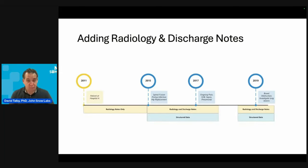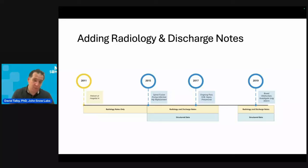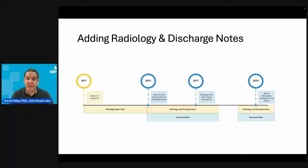When we add unstructured text — specifically discharge notes and radiology reports — there is much more data that becomes available. This woman has been doing radiology like mammography and other things since 2011, so we have data for four more years. We also have much more data about each hospitalization, with things that are only in the discharge notes or radiology within that hospital.